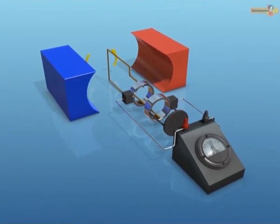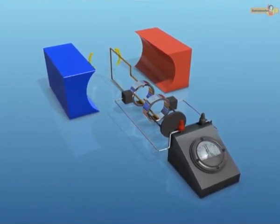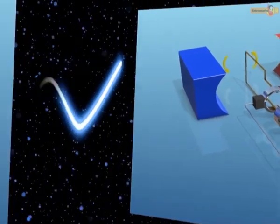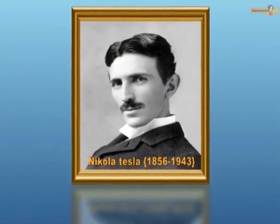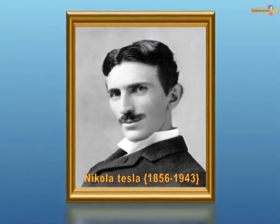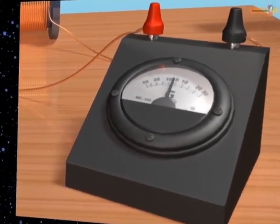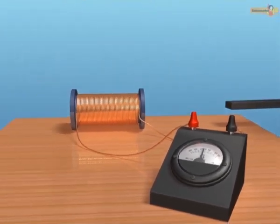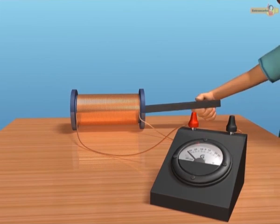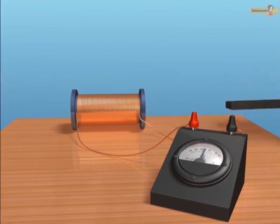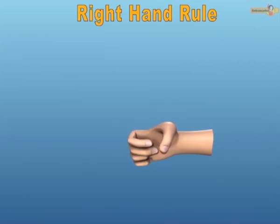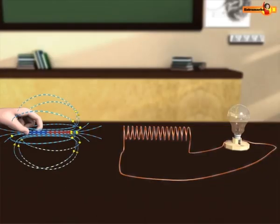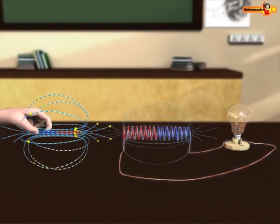An AC generator is a device used to convert mechanical energy into electrical energy. It was originally designed by a famous physicist, Nikola Tesla. Working of an AC generator is based on the principle of electromagnetic induction. According to this principle, a change in flux linked to a coil induces an electric current in the coil. The direction of the induced current in the coil can be given by Fleming's right-hand rule. Lenz law can also be used to find the direction of current in the coil.